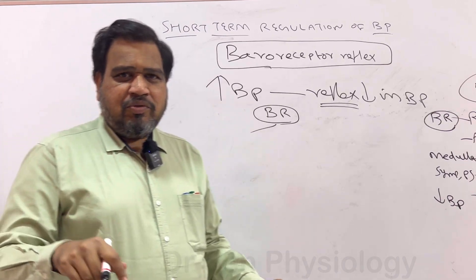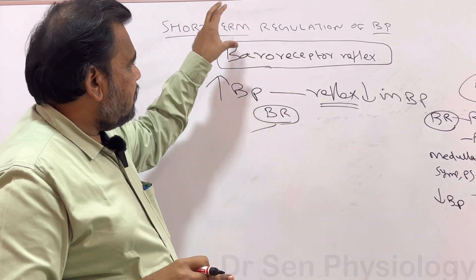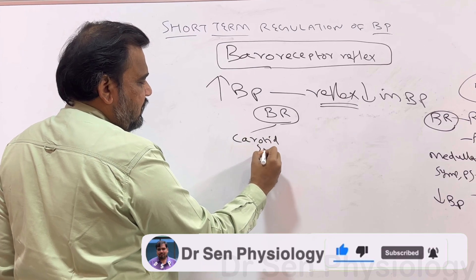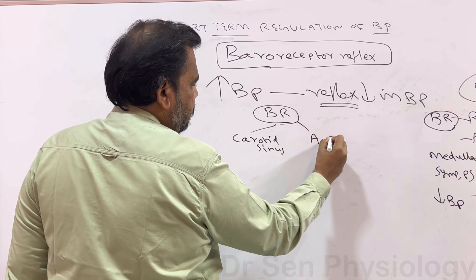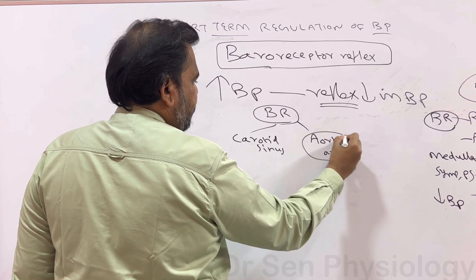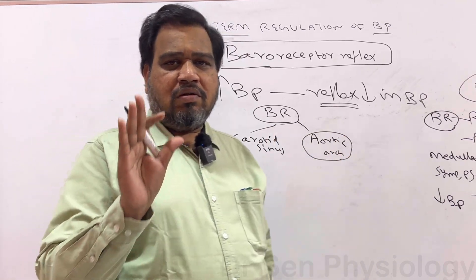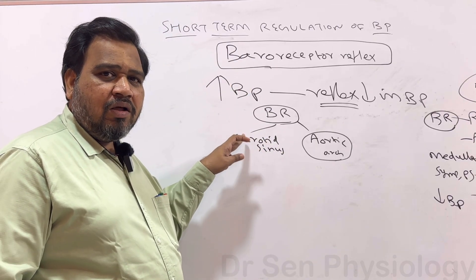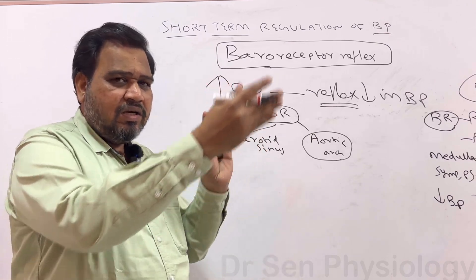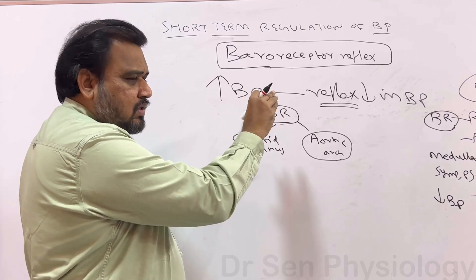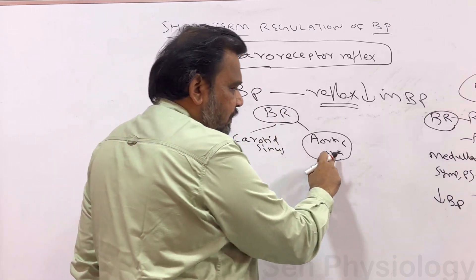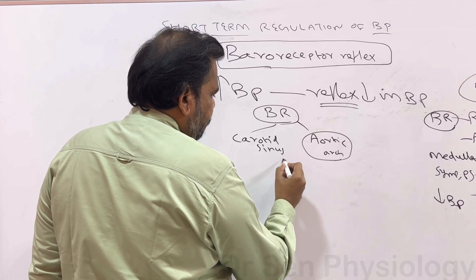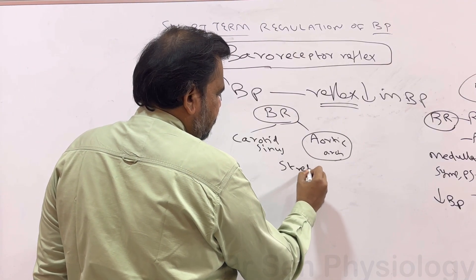For an MCQ: name the baroreceptors. In the case of regulation of blood pressure, we have two types of baroreceptors — carotid sinus and aortic arch. Carotid sinus is present in the internal carotid artery, where the common carotid artery bifurcates into external and internal. There are also baroreceptors in the arch of aorta. These are also called stretch receptors.